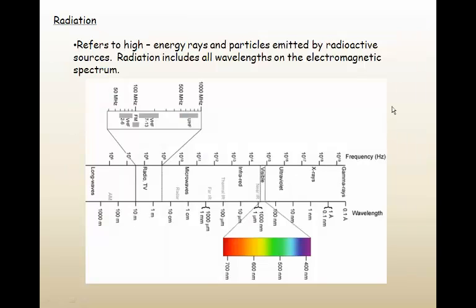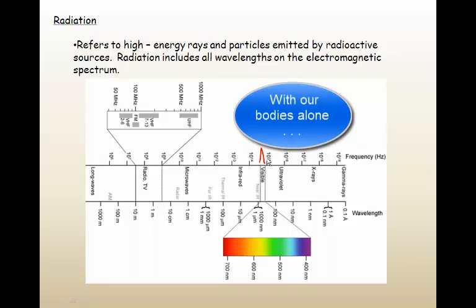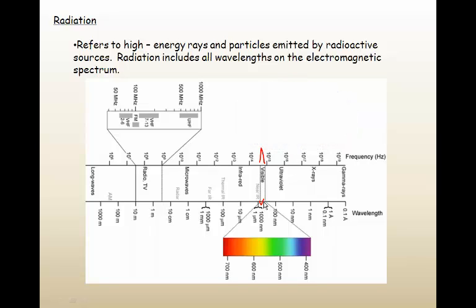So radiation refers to high-energy rays and particles emitted by radioactive sources. Radiation includes all wavelengths on the electromagnetic spectrum, and hopefully you remember learning about this. The only wavelengths that we actually can detect is this little narrow range of wavelengths called visible light. If you take a look at the whole spectrum, what you should remember is that to the left of visible light, we have very long wave radiation, but it gets shorter as it approaches visible light.